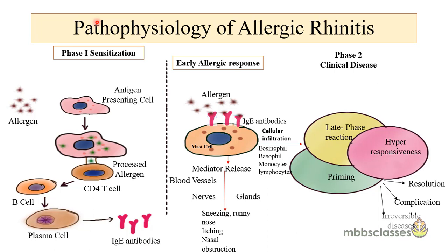This is a complete diagram which describes the pathophysiology of allergic rhinitis. The first stage is the phase of processing of the antigen and the production of specific IgE antibodies. On exposure to the allergen, when it gets deposited on the nasal mucosa, it gets engulfed by antigen-presenting cells. The antigen-presenting cells could be macrophages, dendritic cells or Langerhans cells.